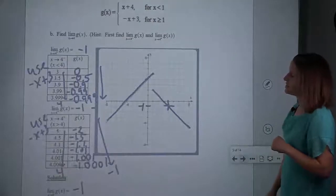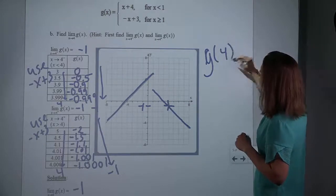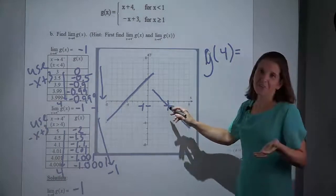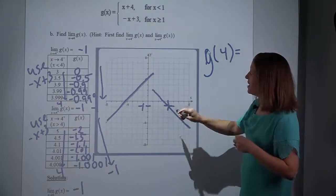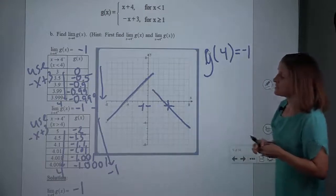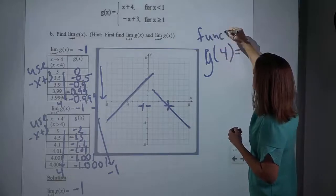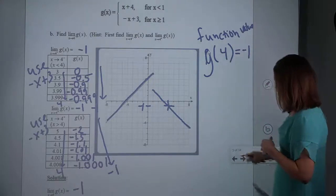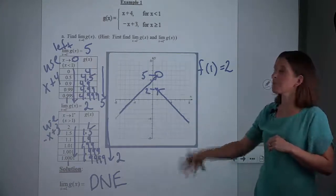Now back to the example that we just did. g of 4 — here there is only one spot. So here if I go right down when x equals 4, I get negative 1. Notice in this example, it just so happens that the function value — this is from pre-calc — and the limit value were the same. Whereas on the last example, they weren't. The limit didn't exist, but we still had a function value.